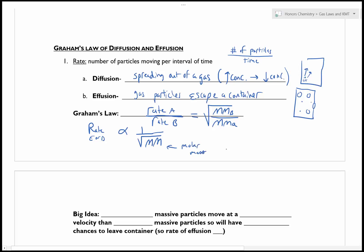It means that particles that are larger are going to diffuse or effuse at a slower rate. So if I'm dividing by a bigger number, the molar mass is increasing, the rate is going to go down.